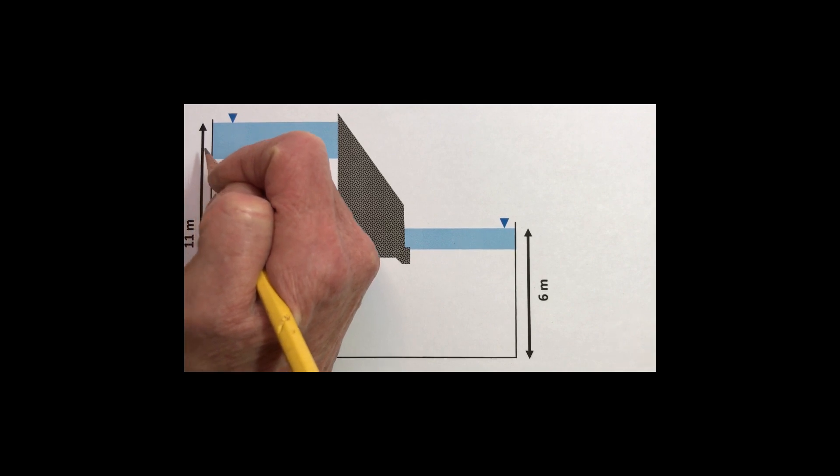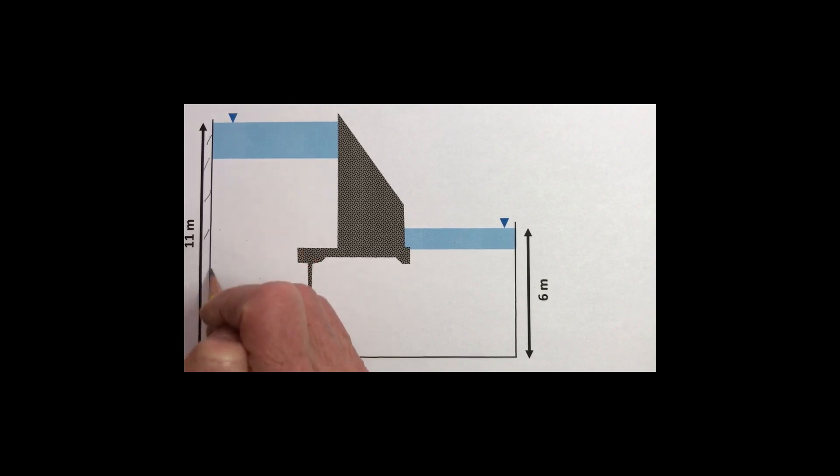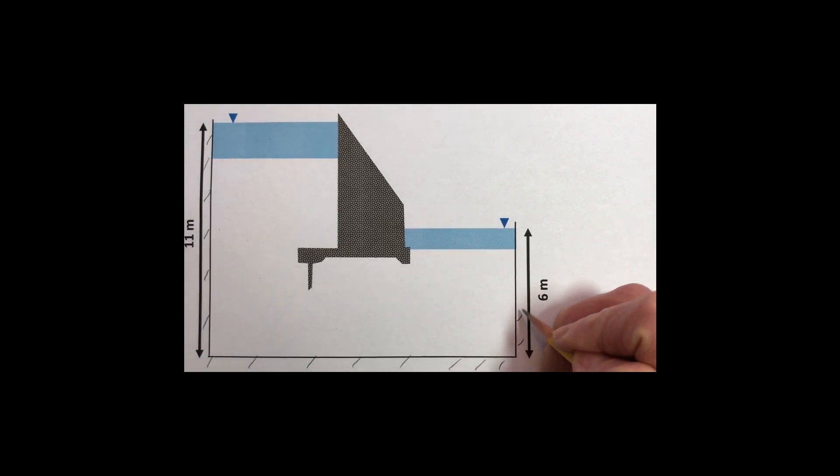To draw a flow net we start by defining the boundaries. This side is an impermeable barrier, the bottom is an impermeable barrier, and the wall on the right is an impermeable barrier. With a flow net we draw everything to scale, doesn't matter how large it is as long as everything is expanded or reduced to the same scale. We have to have a datum for the flow net and for this we will use the base of the system.